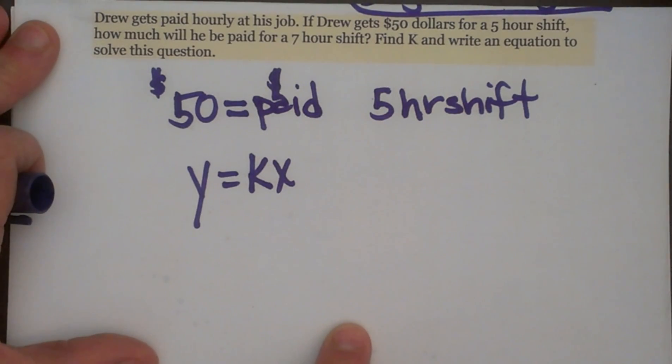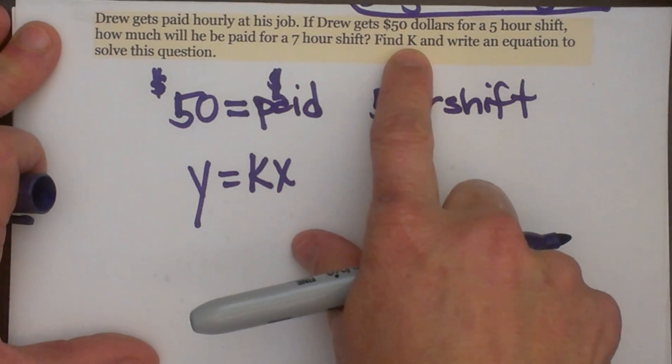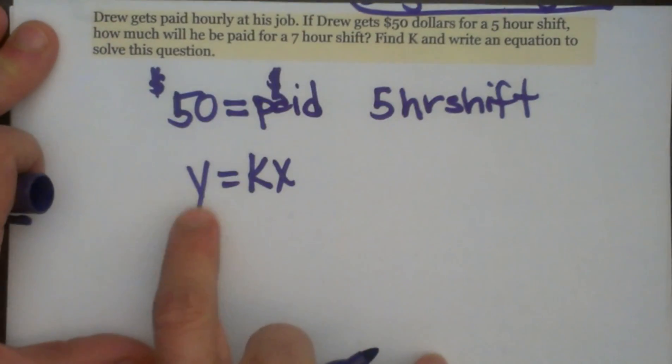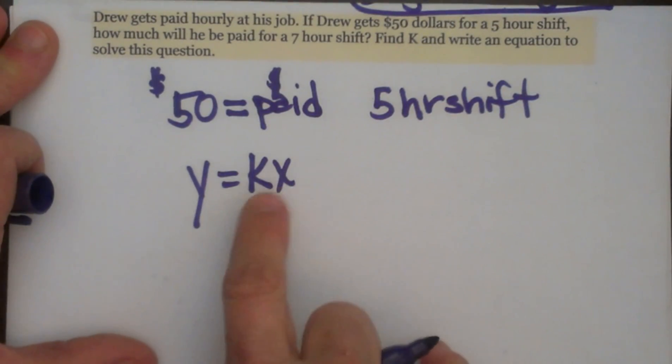Okay, so this question is actually asking us to find K, which is the direct variation formula. The direct variation formula is Y equals KX, where K is a constant that you are going to use just like the slope of a line.